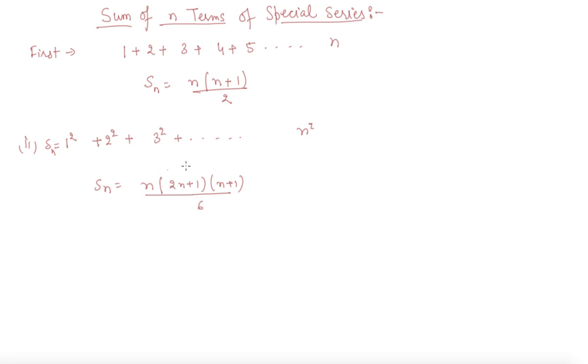So these two terms in the numerator are the same: n into n plus 1. And one more term is added in the middle which is the sum of these two terms, which is 2n plus 1, upon 6.